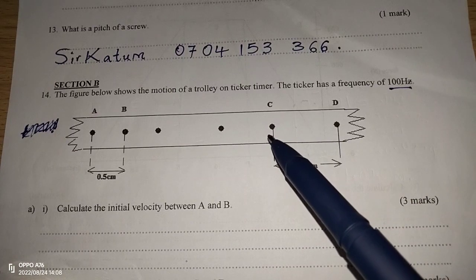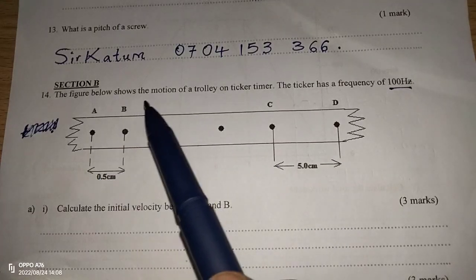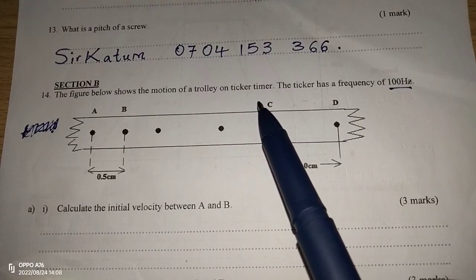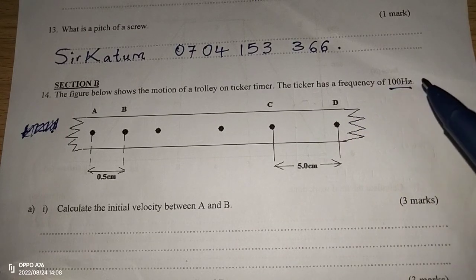Thank you for joining this lesson. We're going to study the functioning of the ticker timer. The figure below shows the motion of a trolley on ticker timer. The ticker has a frequency of 100 Hz.